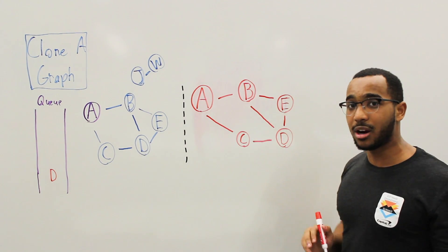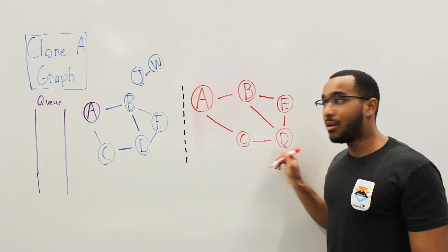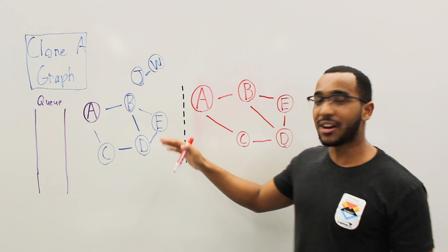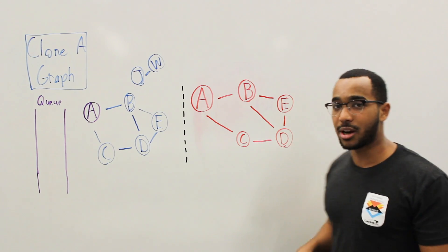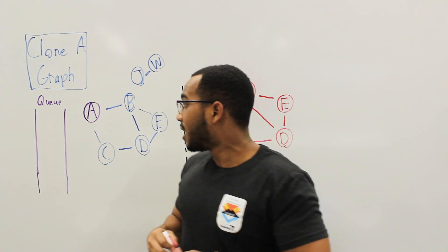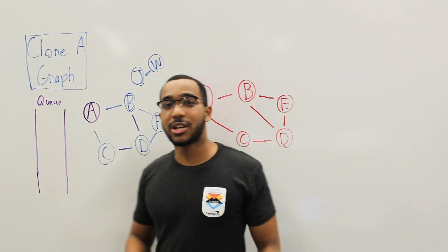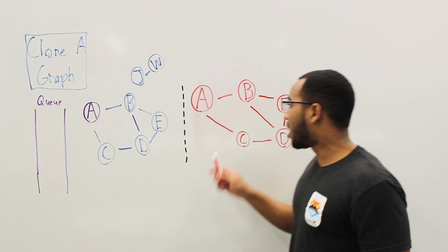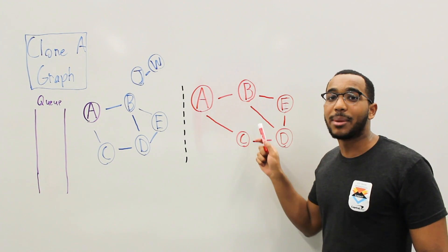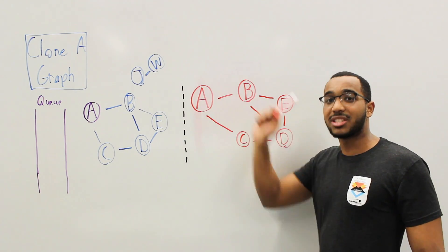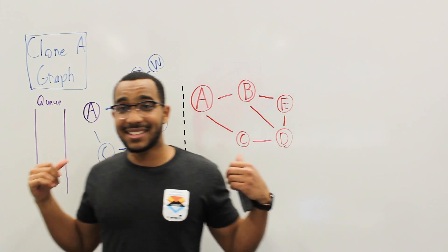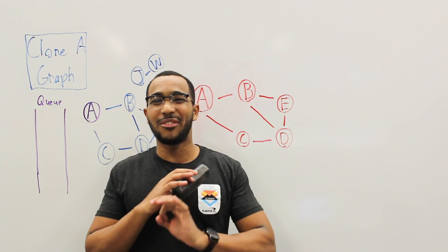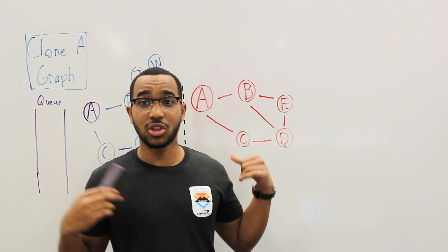Finally we process D. We notice D has all of its edges expressed — three edges. We do the for loop through all of the adjacents making sure all edges are expressed, and they are. Our search has finished because our queue is done. We've searched every single node, and at each node our job was to express all of the edges coming off of that node in the clone graph — facilitated by the hash table. Highly recommend checking the code in the description. Once you read the code it will become very clear how this problem is done.